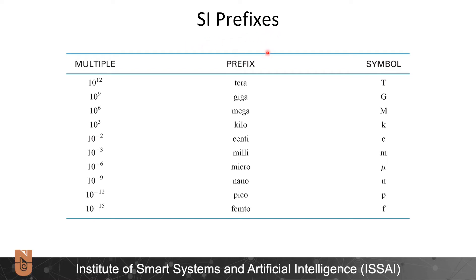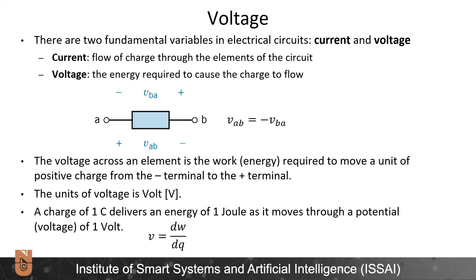There are two fundamental variables in electrical circuits: current and voltage. Current is the flow of charge through the elements of the circuit, whereas voltage is the energy required to cause the charge to flow. The voltage between terminals A and B is denoted as VAB, and VAB is equal to minus VBA. The voltage across an element is the work required to move a unit of positive charge from the negative terminal to the positive terminal. The unit of voltage is volt, abbreviated V. A charge of one Coulomb delivers an energy of one Joule as it moves through a potential of one volt.